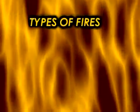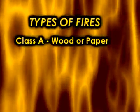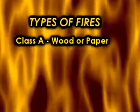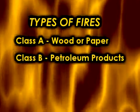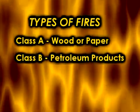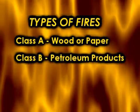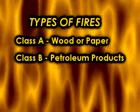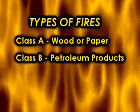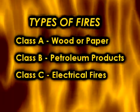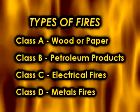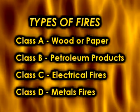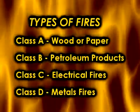There are four main types of fires: Class A for ordinary combustibles like wood or paper, Class B for flammable liquids like petroleum products and solvents, Class C for electrical fires, and Class D for metals fires.